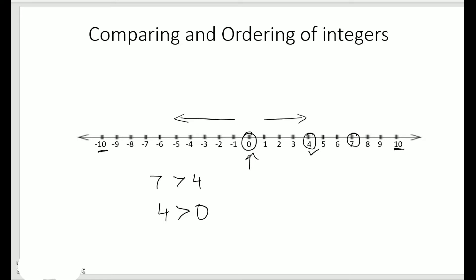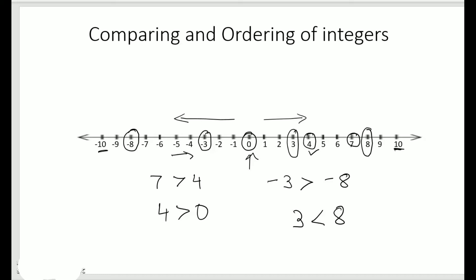Now let's take minus 3 and minus 8. Minus 3 is here and minus 8 is here. Minus 3 is to the right of minus 8, so minus 3 is greater than minus 8. Notice that 3 is less than 8 — because 8 is to the right of 3 — but when taking minus 3 and minus 8, minus 3 is located to the right of minus 8, so minus 3 is greater.